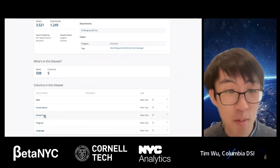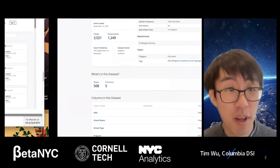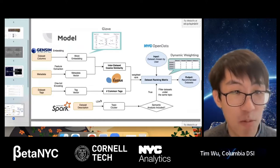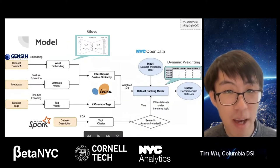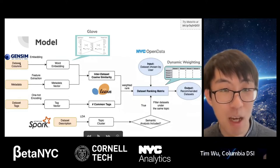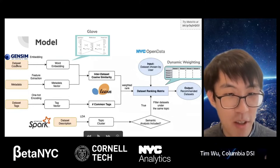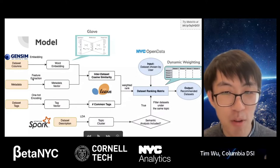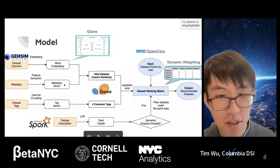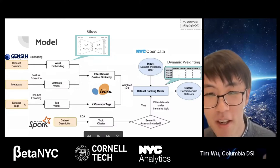Our approach involves looking at the information from the NYC Open Data website: we look at the columns within a dataset, then use word embedding — specifically a model from Stanford — to convert that information into something calculable by a machine. We also extract metadata from the platform to create vector representations. All of this is used to calculate how similar two datasets are. We also use tag information. All three sources are combined through a weighted rank to recommend datasets based on the one you choose.